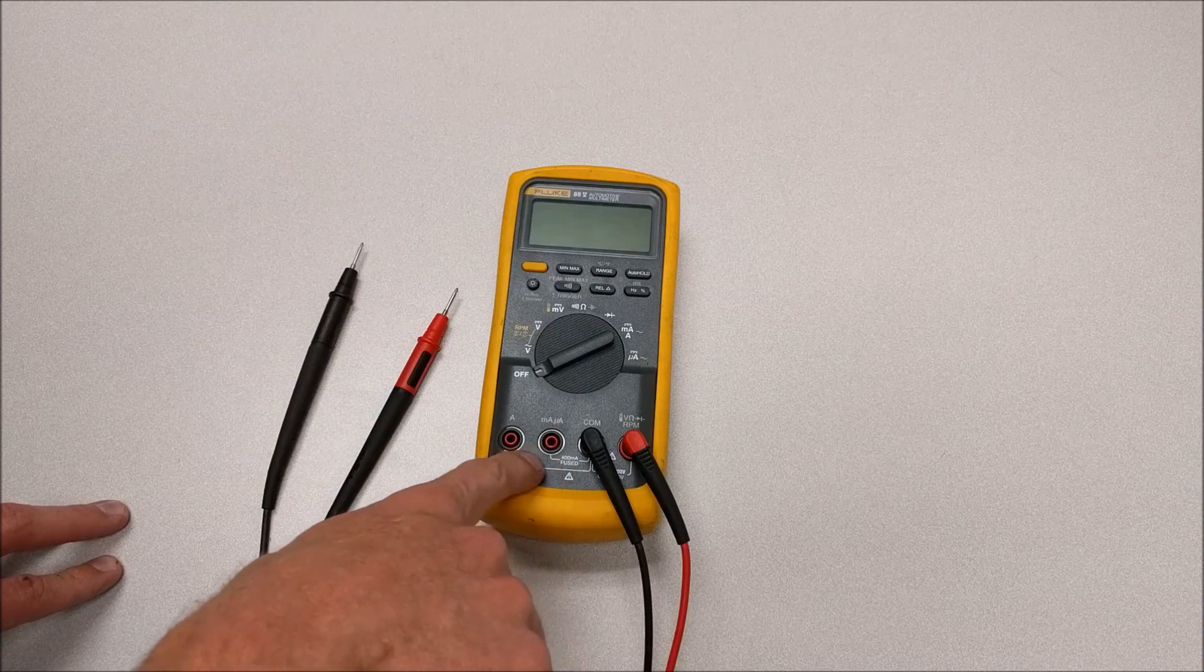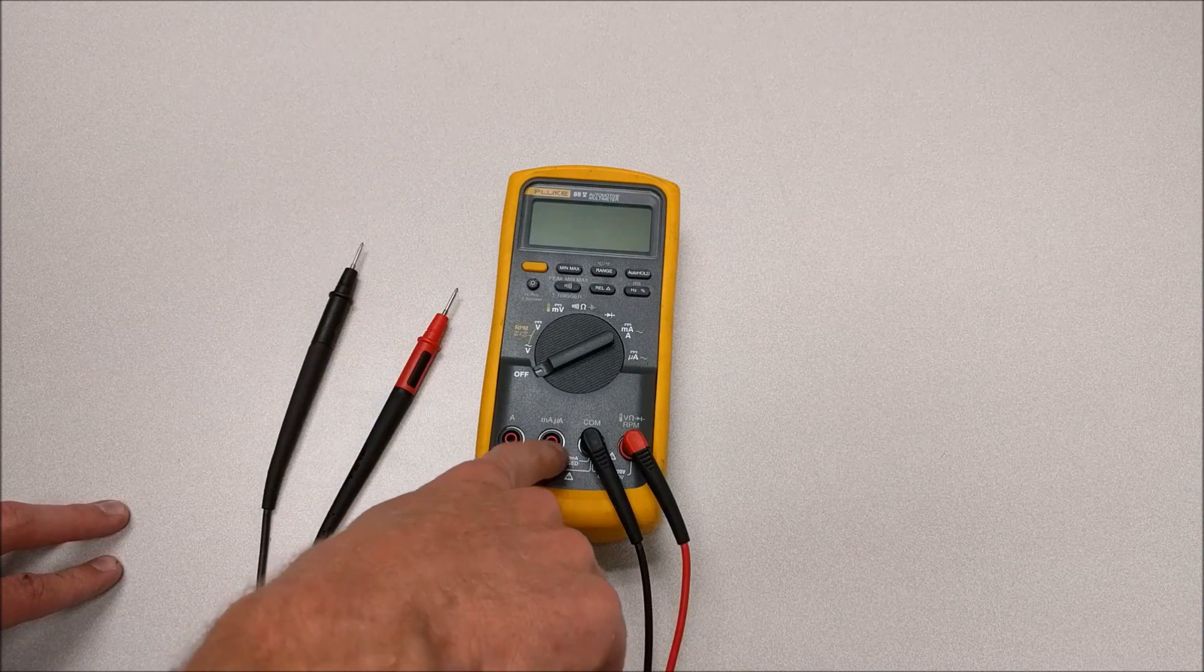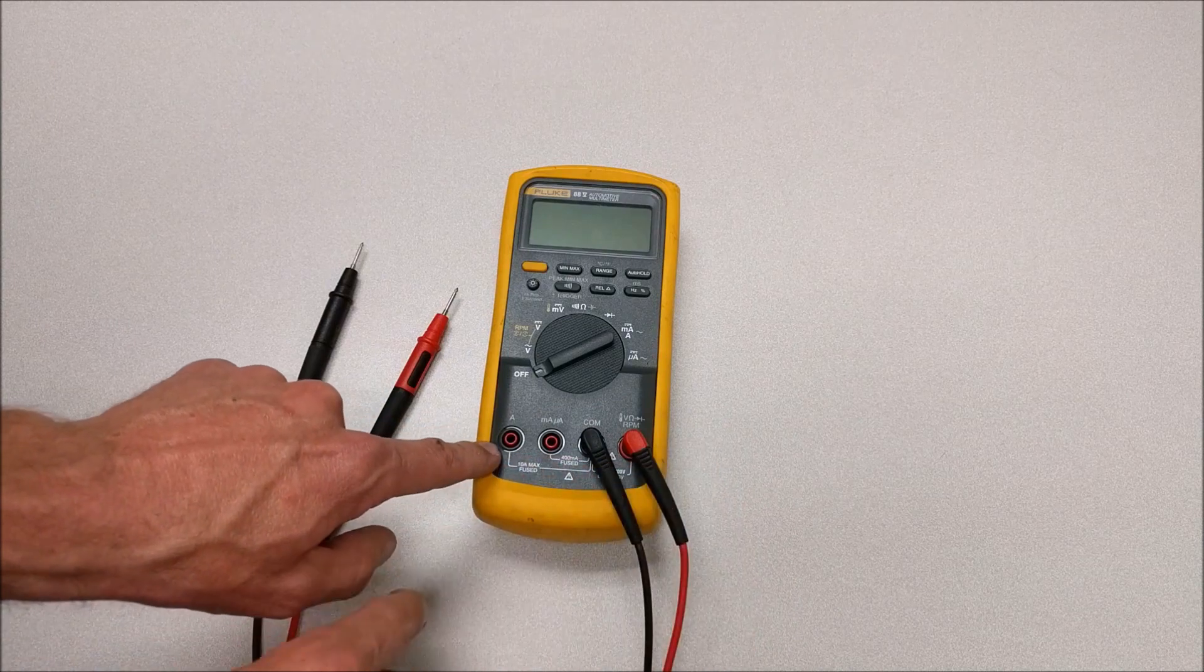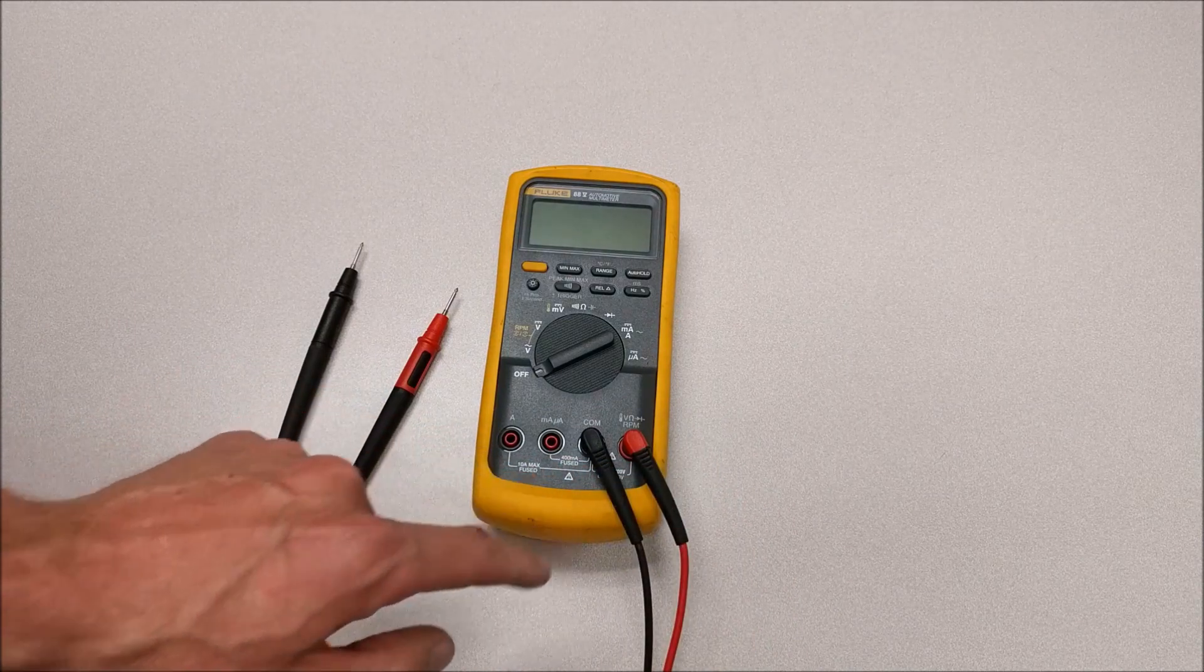In this case, we have two options. I can measure milliamps, and that position is fused at a 400 milliamp fuse, or I could measure amps, and this one is fused at a 10 amp fuse.